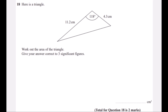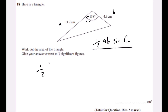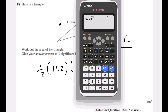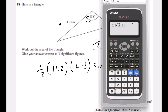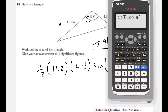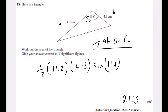Question 18. Work out the area of the triangle. The area of any triangle can be found using ½ab sin C, where C is the included angle. Substituting the values into the calculator gives 21.3 to 3 significant figures.